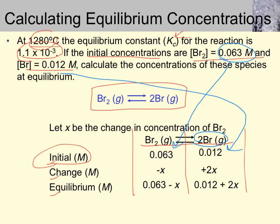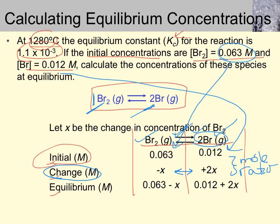We don't know the change in concentration yet, but we do know the ratio. Looking at the balanced reaction: one bromine molecule decomposes to form two bromine atoms, giving a 1-to-2 mole ratio. That mole ratio must be maintained in the change row of the ICE table. So for every x bromine molecules that disappear, 2x bromine atoms are formed.